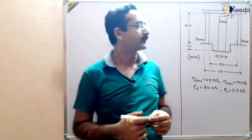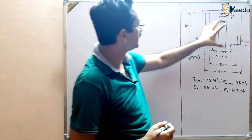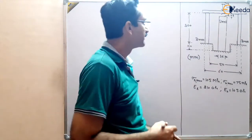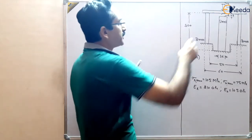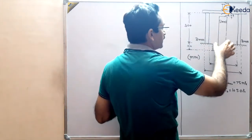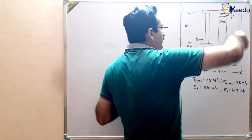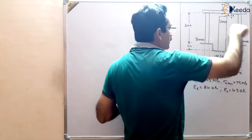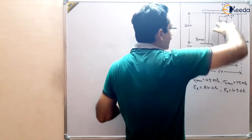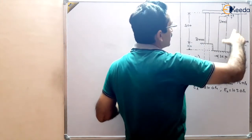In this numerical, we are given a composite section of brass and steel. There is a steel rod at the center surrounded by a brass tube — both are circular cross-sections.